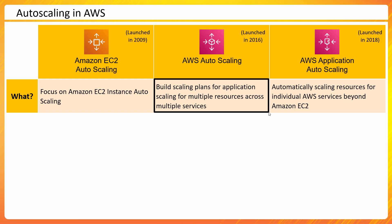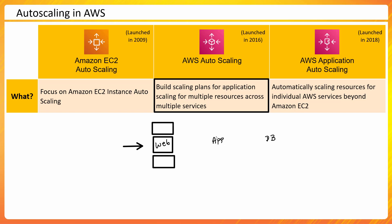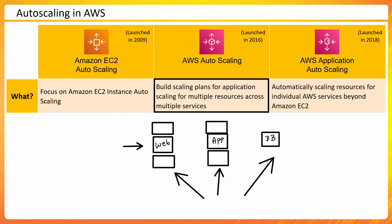AWS Auto Scaling lets you build a scaling plan for multiple resources across multiple services. For example, when you have an application made up of a web server, an app server, and a database — if requests increase on your web tier, you keep adding more web servers. But that also means you may want to increase app server capacity and database capacity at the same time. Configuring separate policies for each would be complicated.